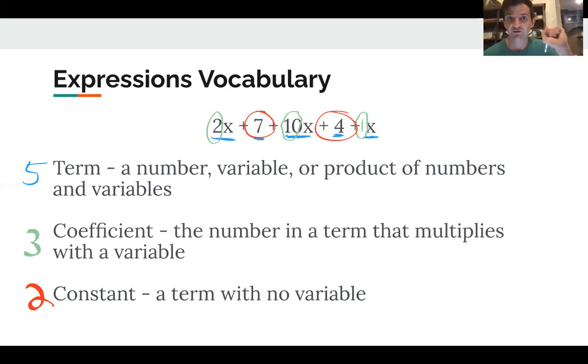The multipliers, the numbers multiplying with the variables are called coefficients. And of course, there are five terms here.